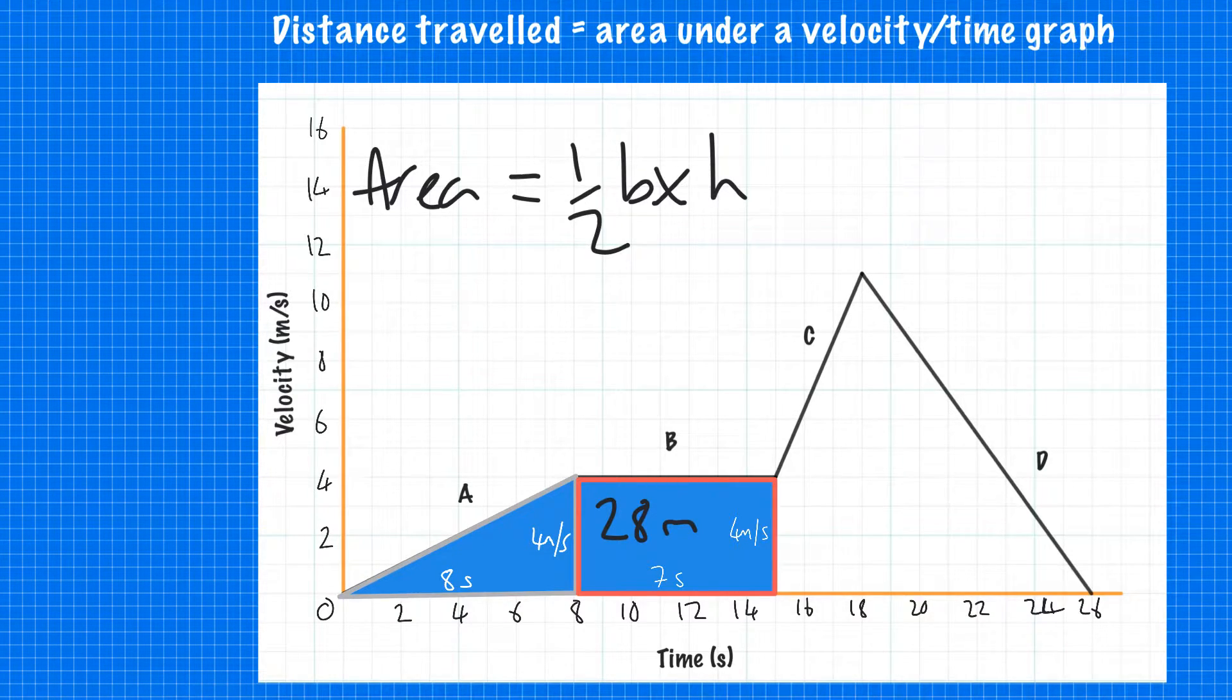In this example, you would have one-half times 8 times 4, which gives you 16 metres. So in section A, they traveled 16 metres.